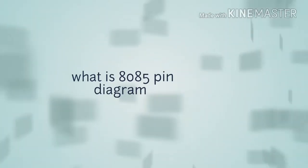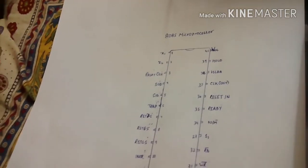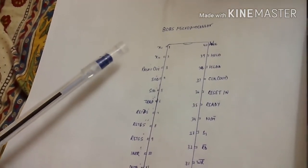This is an 8085 microprocessor pin diagram. There are 40 pins. Now it is a very difficult task, so I have a simple way to do it.